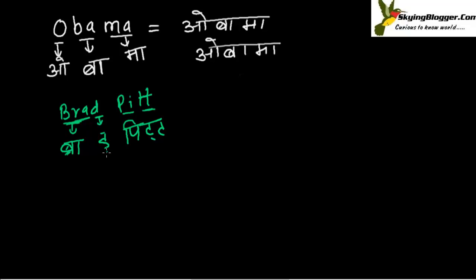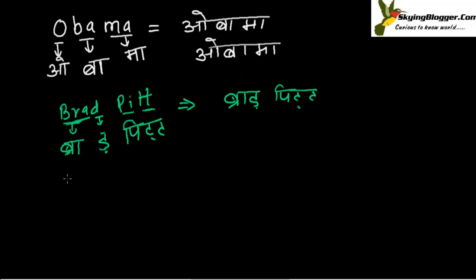Generally in Hindi we put a dot over certain characters. Note: in Nepal, people do not write it this way — so if you are learning Nepali script that is different. In Hindi we generally put the dot like this. So it's Brad Pitt — let me write it once again: Brad Pitt.